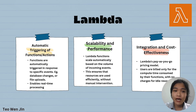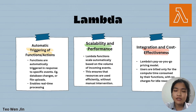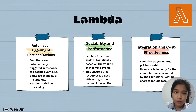Lambda triggers seamlessly with other AWS services, allowing us to build complex workflows and applications. Whether we are processing data in S3, analyzing logs in the cloud, or sending notifications with SNS, Lambda can be a central component of our AWS architecture. Lambda automatically scales our application by running code in response to each trigger. Whether we have 10 users or a thousand users, Lambda can handle the workload without manual intervention. With Lambda, we only pay for the compute time of our code for actual use, with no upfront costs or minimal fees. This pay-per-use model can result in significant cost savings, especially for applications with varying workloads.